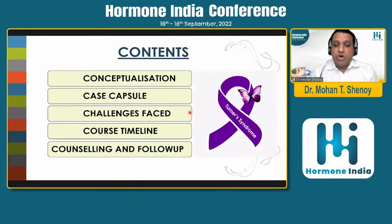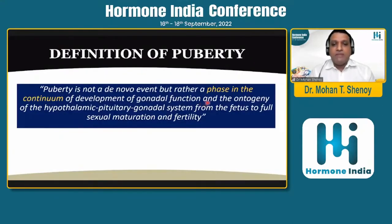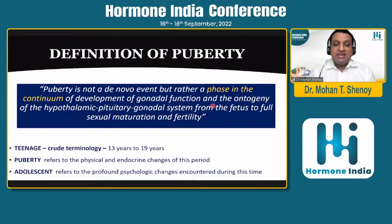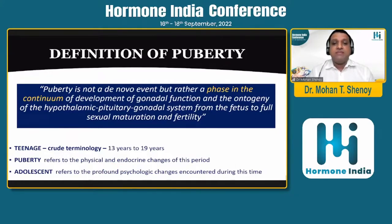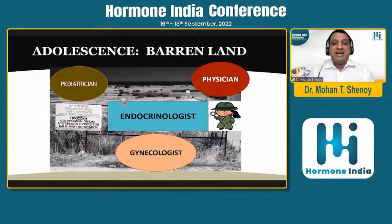So, a case capsule: how many challenges can you face, how to induce puberty optimally, and how to counsel patients on follow-up. Dr. Vijay Sarathi dealt with the approach to puberty. Puberty is a continuum and there is a physiological process which occurs. The teenage years are a crude terminology from 13 to 19 years, whereas puberty is a technical term for the physical and endocrine changes in this period. Adolescence is a profound psychological change encountered during this time. The adolescent period is just like a barren land — an unclaimed territory where the physician, the pediatrician, the gynecologist all delve into, and endocrinology stands as a major specialty that can help the transition period.